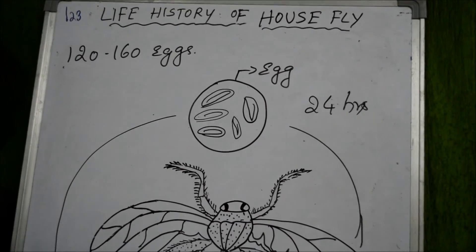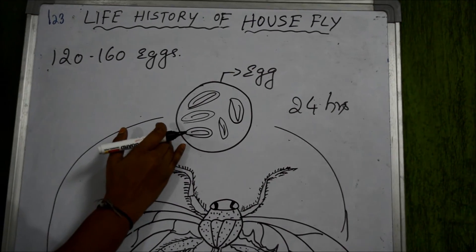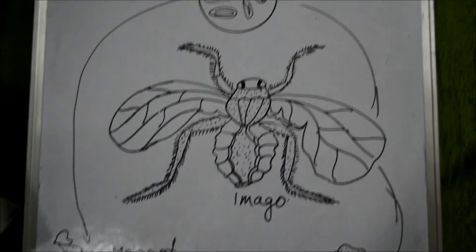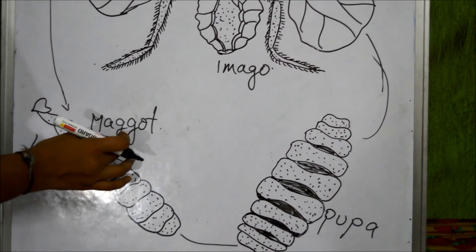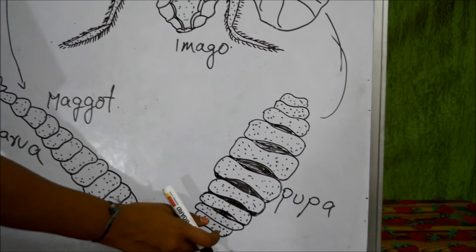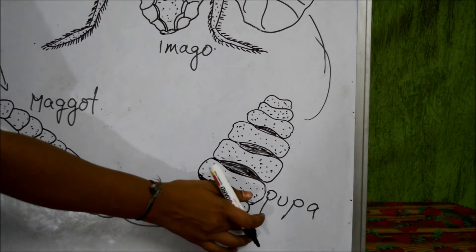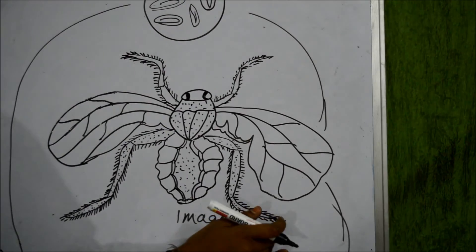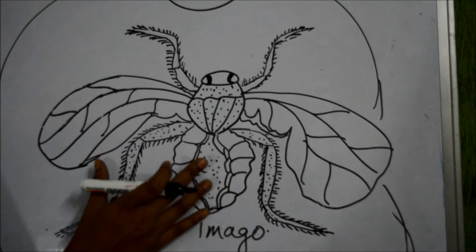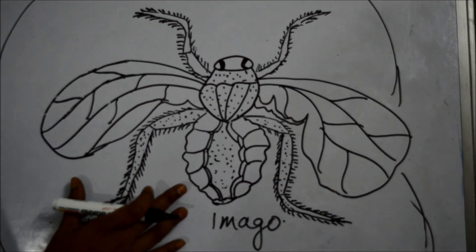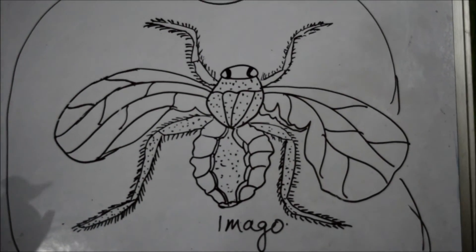This is the life history of the housefly, and it has four stages. First, it starts from the egg. It goes into the larvae stage, which we can also call maggot. From this, within one week, it changes into pupa. After pupa, it changes into the adult imago housefly. This is the life cycle of the female housefly.